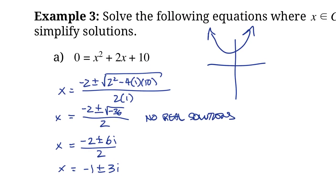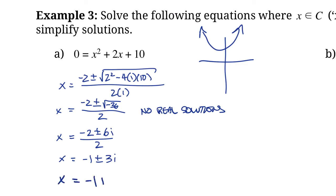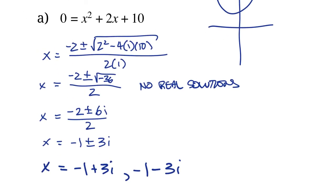So our two solutions are x equals negative 1 plus 3i and negative 1 minus 3i. Even though there's no graphical representation on the real plane of where it intersects the x-axis, it actually intersects the complex plane. We're not going to get into graphing that in this course because to plot the complex plane you actually need a four-dimensional graph. But either way, these are the complex solutions to that equation, and it does have two solutions.